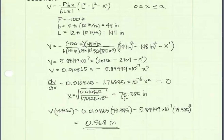And plugging in a value of x equal to 78.385 inches, we get that our maximum deflection is going to be equal to 0.568 inches. And that's positive because our deflection will be upward.